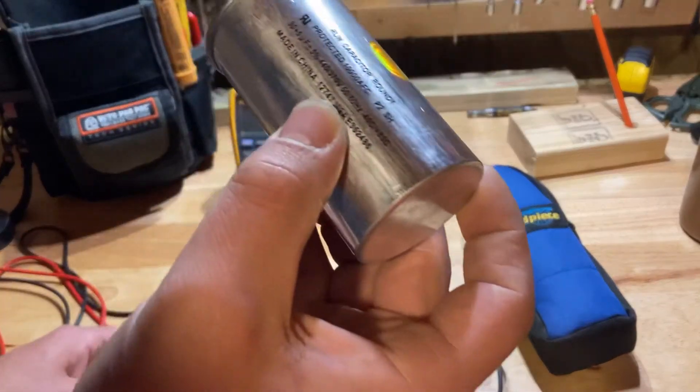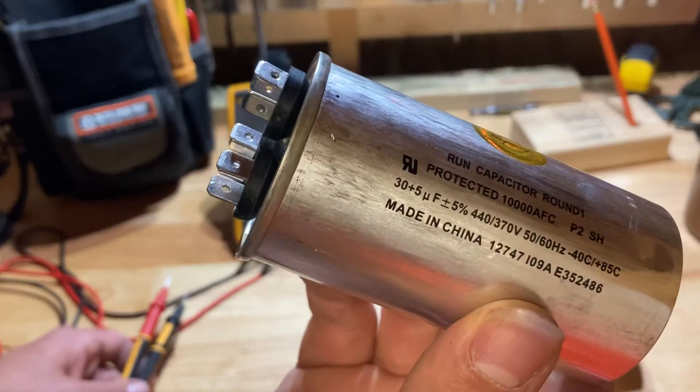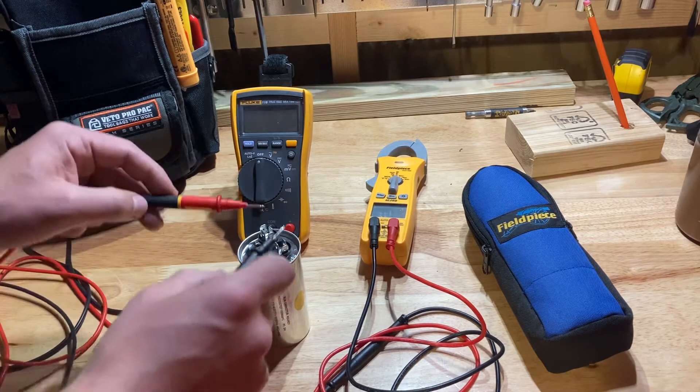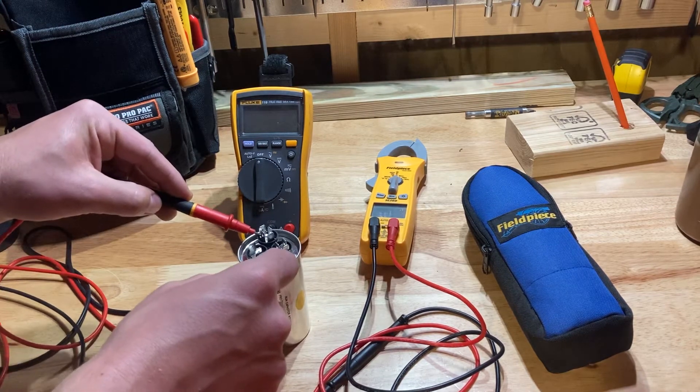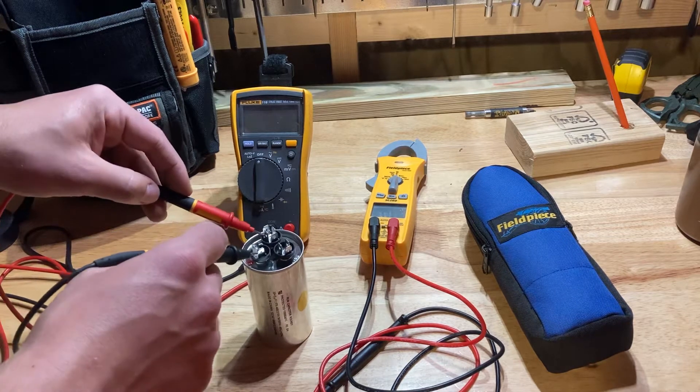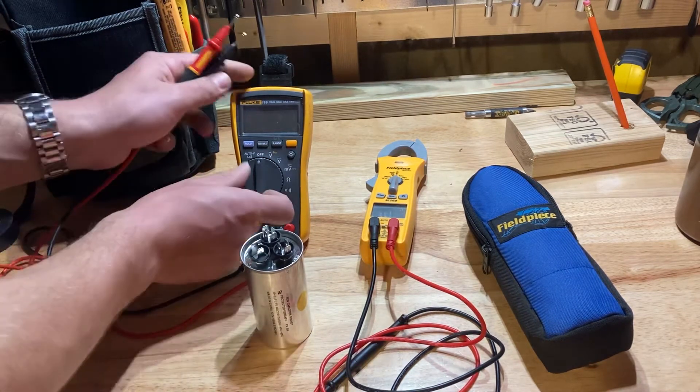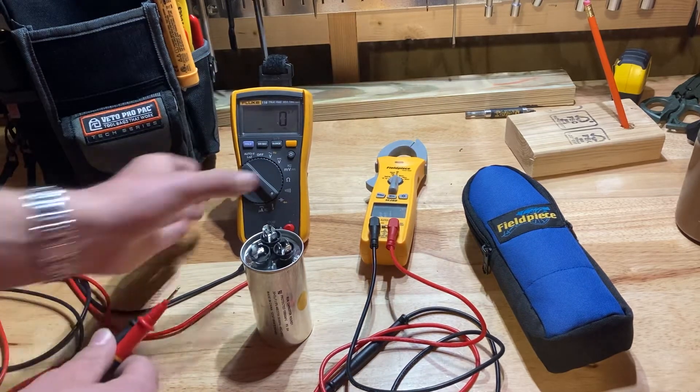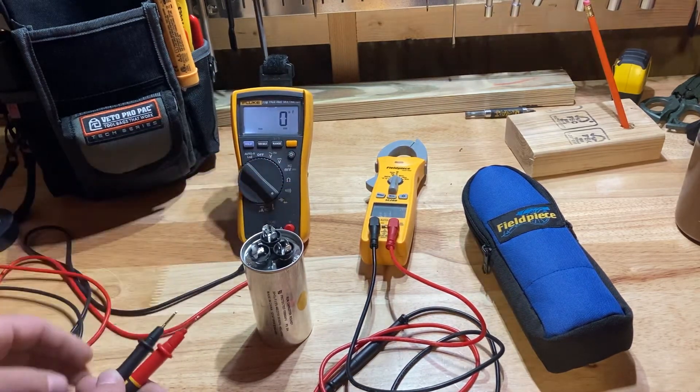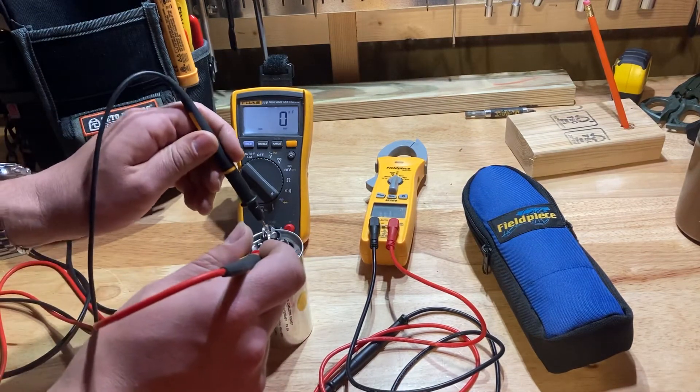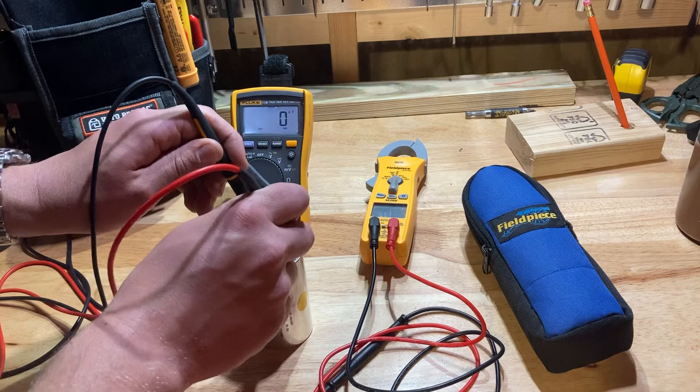If you're using multimeters to test stuff, I would recommend this Fluke way before I would recommend the Fieldpiece. I'm going to test this capacitor. This is a 30 plus 5. So from the common to the herm we should be getting 30 microfarads, and from the common to the fan we should be getting 5. I'm going to turn it to microfarads and you can see that screen good. We're going to go common to herm.